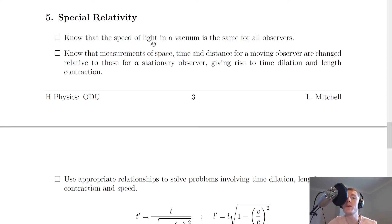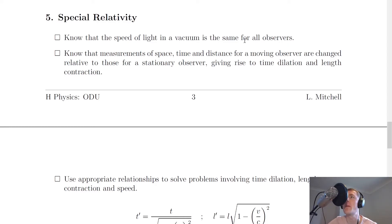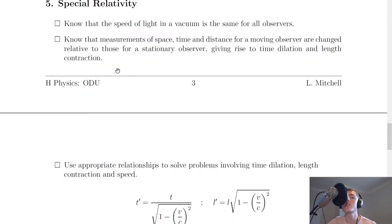Moving on to section 5 — special relativity. You should know that the speed of light in a vacuum is the same for all observers. This was one of Einstein's two postulates, but it also helps to remember the other one: the laws of physics are the same for all observers.